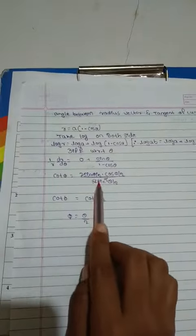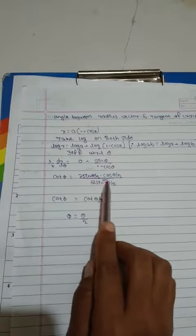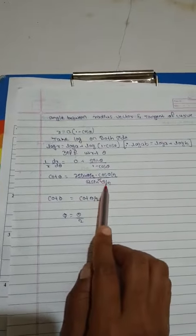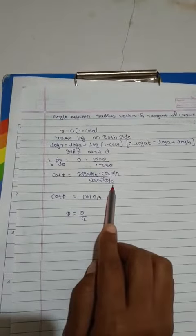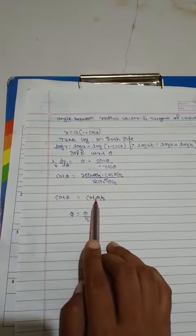Then, we can cancel the 2 and 2 and sin theta by 2 and sin theta by 2. Then, cos theta by 2 divided by sin theta by 2 is equal to cot theta by 2.